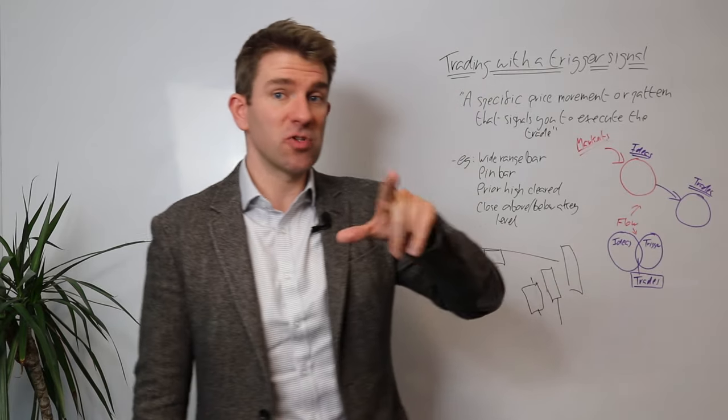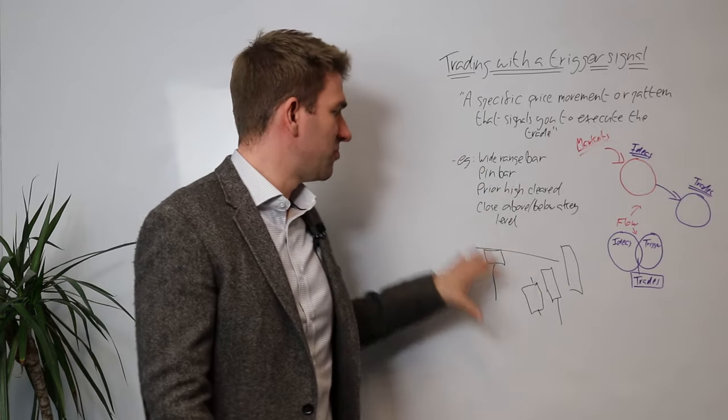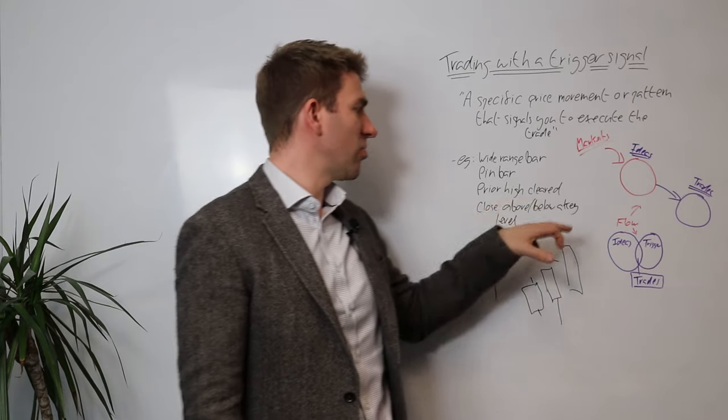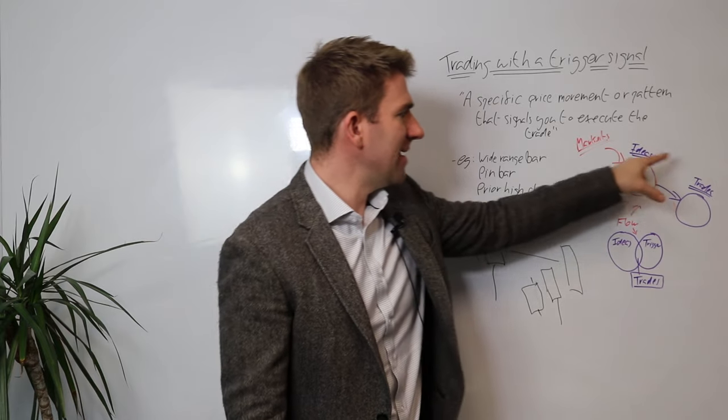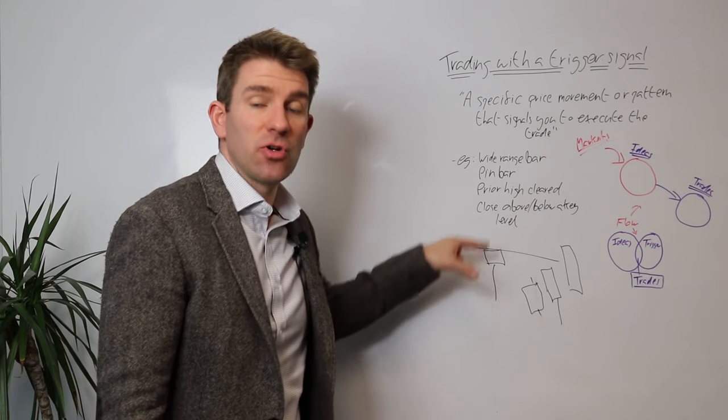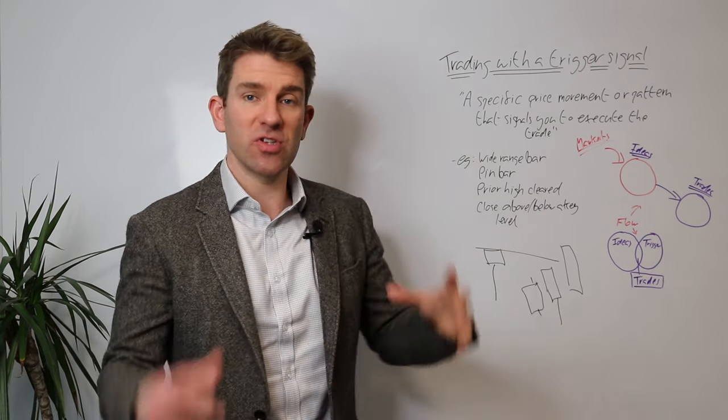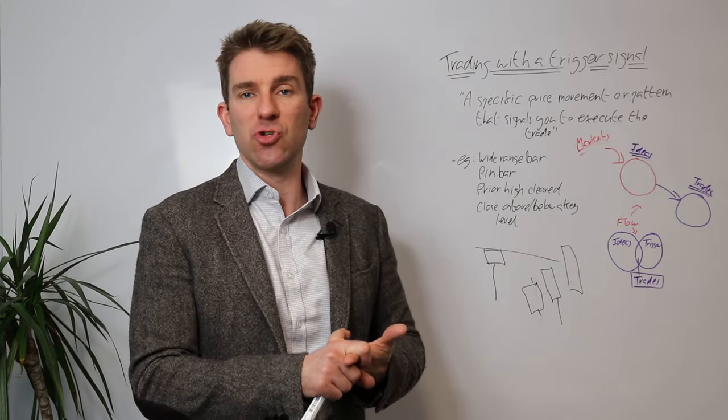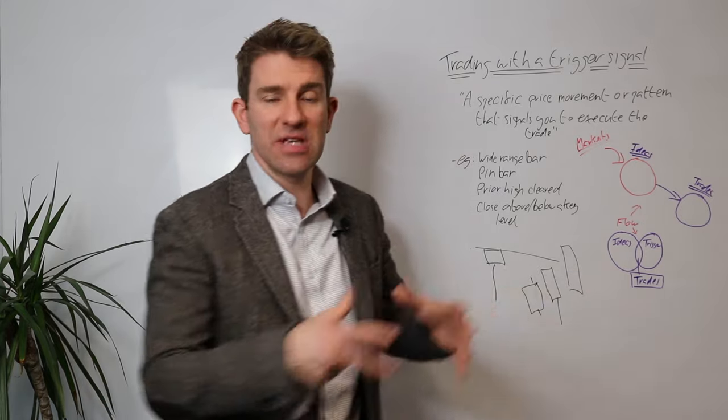This is where it gets interesting as well, why you can prevent yourself overtrading. Because number one you're not going to pull the trigger on stuff that hasn't been actually triggered. You haven't got the pin bar, you haven't got the wide range bar, you haven't got your close above a key level, whatever it may be for you. But also if you're using the idea framework as well, you might get triggers, you get pin bars all the time, but unless it's on a trade idea you've already done the analysis on, you're not going to pull the trigger. So the power of combining these two means that you are far less likely to just shoot from the hip.